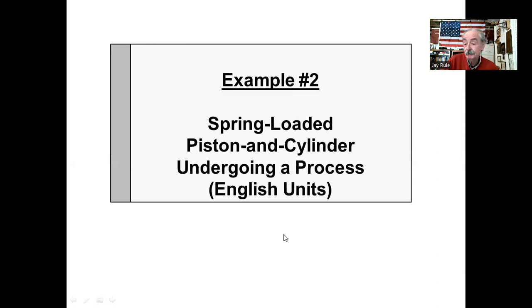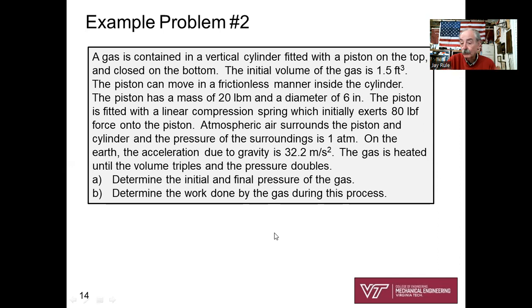Example two, going to be similar problem except in English units. I have rewritten the problem. I've changed the numbers around a bit and changed the units. Initial volume is 1.5 cubic feet. Frictionless manner, the piston has a mass of 20 lbm, pounds mass, and a diameter of six inches. The piston fitted a linear compression spring, initially exerting 80 pounds of force, 80 pounds force onto the piston. Atmospheric air at one atmosphere, acceleration of gravity given, the gas is heated and volume triples again, and the pressure doubles again. Determine the initial final pressure and the work done. So you can see that the theory you've got, but we've got to be careful with units.